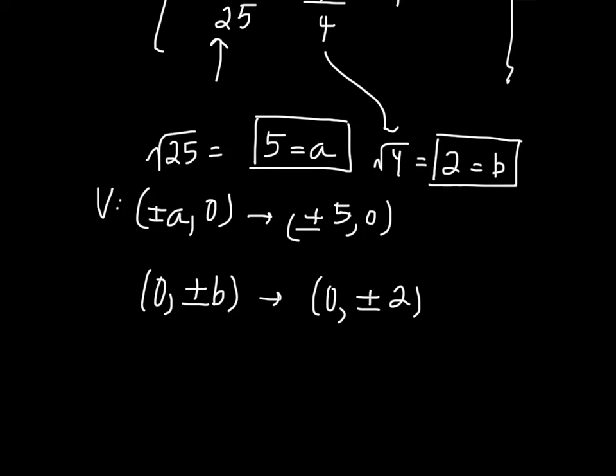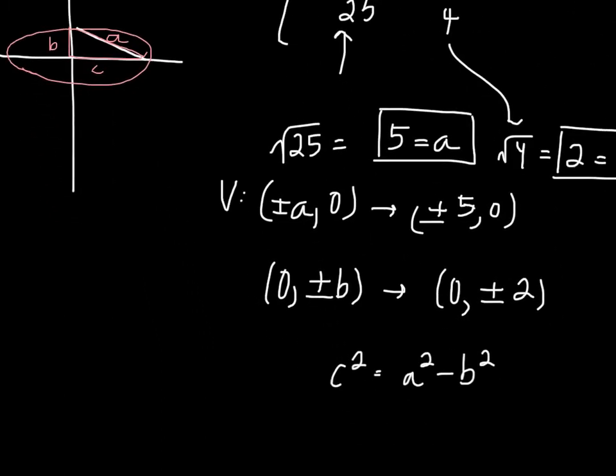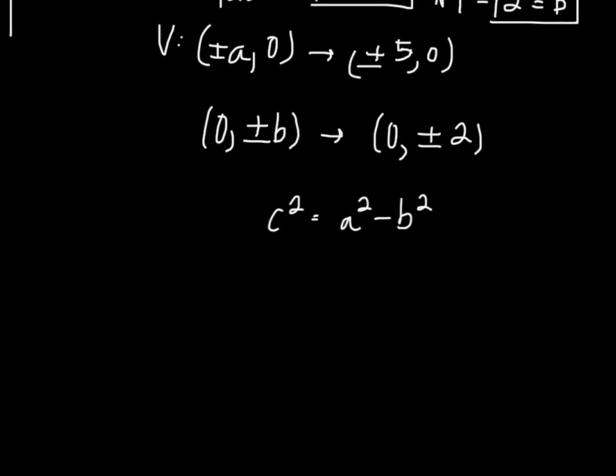Now we need to find c, which is our distance from the center to the foci, by using the Pythagorean theorem. We have c squared equals a squared minus b squared. This is because we can create a right triangle within the ellipse in which our a value is the hypotenuse and b and c are legs. Therefore, we can use the Pythagorean theorem to find out what our c is. When we solve this, we have c squared equals 5 squared minus 2 squared, so c equals root 21.